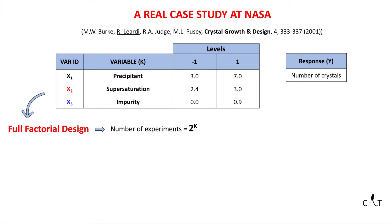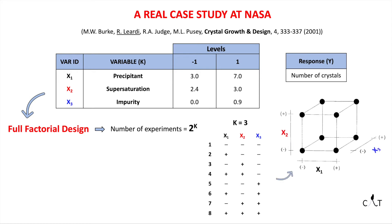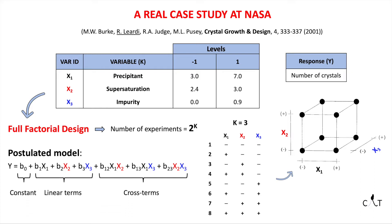This design requires a 2^k number of experiments. So with three variables, here is displayed the experimental matrix with 8 experiments, which geometrically stand in the corners of the experimental domain — a cube considering three variables. Thanks to the experimental design, we can get a mathematical model which allows us to predict the experimental values in every point of the domain, and get the effects of all the variables we are studying with their interactions. Here we have our postulated model, which includes the constant, the linear terms, and the cross terms of each variable.